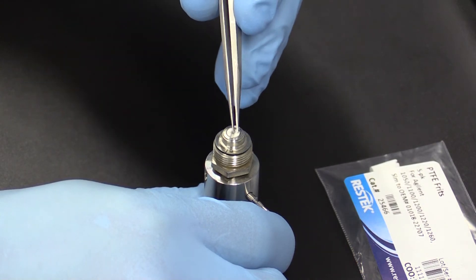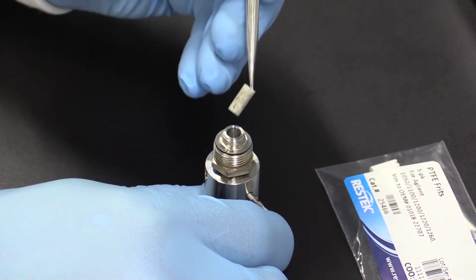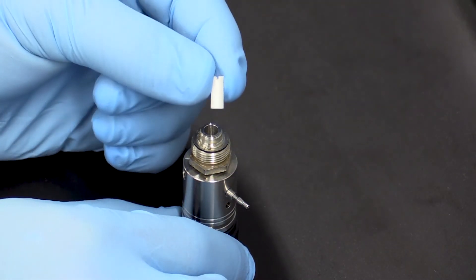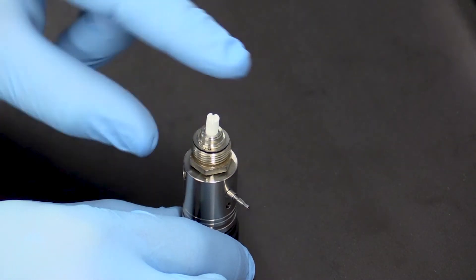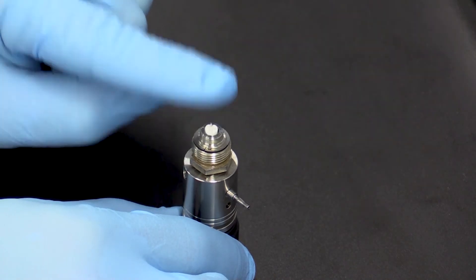Use the tweezers to remove the existing frit. Install a new frit with the slotted end pointing up. This ensures that the area of the frit with the most surface area is facing the direction of solvent flow.